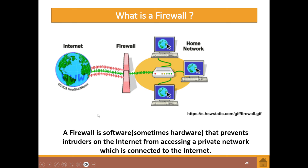Last but not least — the firewall. A firewall is software, and sometimes hardware, that prevents intruders on the internet from accessing a private network which is connected to the internet. Your private home network connects to the internet via your router, and the firewall prevents intruders from coming through into your private home network. Most of the time your antivirus software has a built-in firewall. Larger companies use specialized software and sometimes physical hardware to act as a firewall. And that's it for this module.